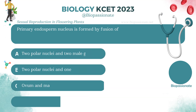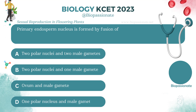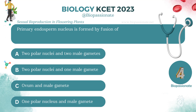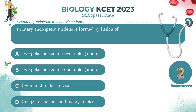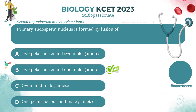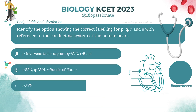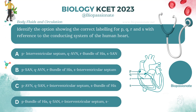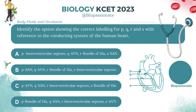Primary endosperm nucleus is formed by the fusion of what? Answer: 2 polar nuclei and one male gamete.